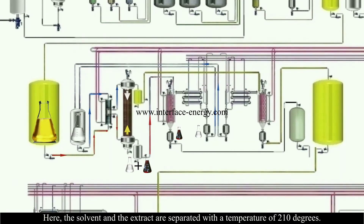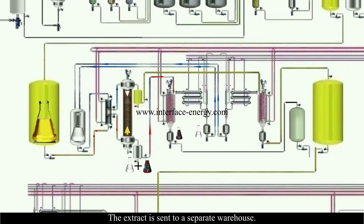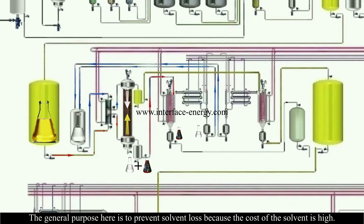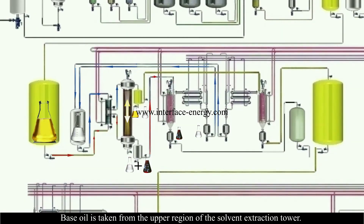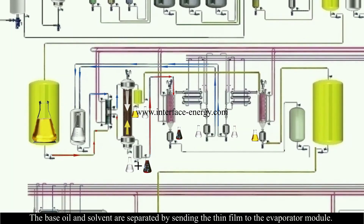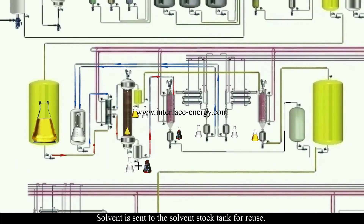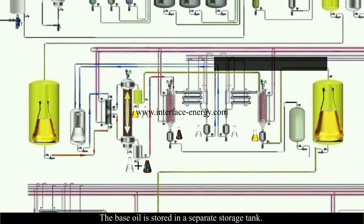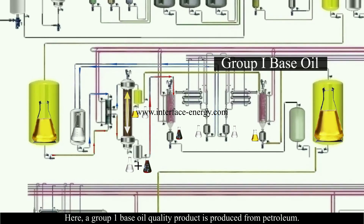The solvent and extract are separated at 210 degrees. The extract is sent to a separate storage, and the solvent is returned to the solvent storage tank for reuse, since solvent costs are high. Base oil is taken from the upper region of the solvent extraction tower; it contains approximately 5% solvent, which is separated in the thin film evaporator module. The recovered solvent is reused, and a Group 1 base oil quality product is produced from petroleum.